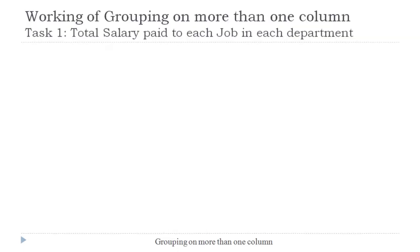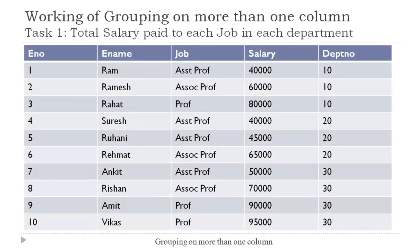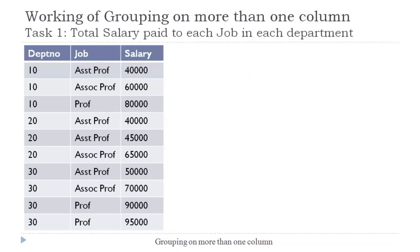To understand this concept, let us consider a database of employees having five columns: employee number, ename, job, salary, and department number. We wish to find total salary paid to each job in each department. To perform this operation, only three columns — job, salary, and department number — will play a role, so let's simplify this database by selecting only these three columns.